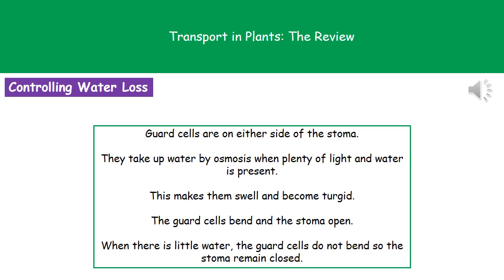If, however, we're in a situation where there's only a limited amount of water present, then our guard cells are flaccid. That means they're not going to be bending outwards, so the stomata will remain closed, and that therefore prevents our plant from losing any extra water when it doesn't have large amounts available.